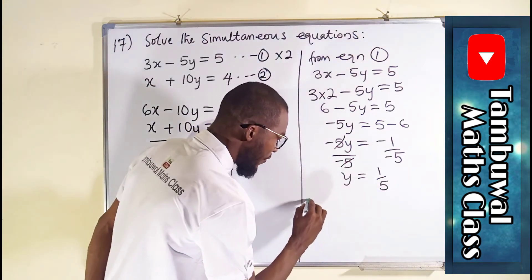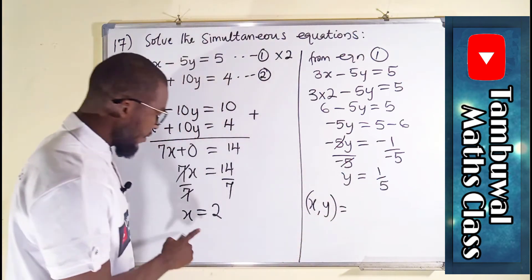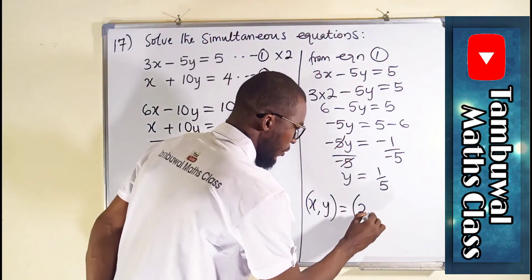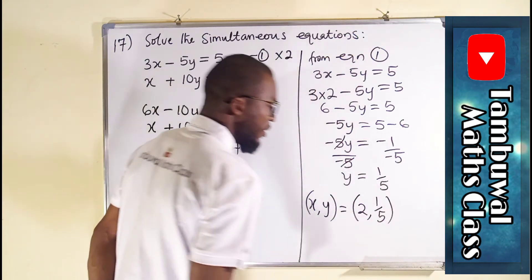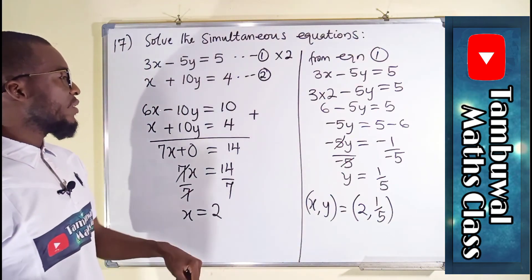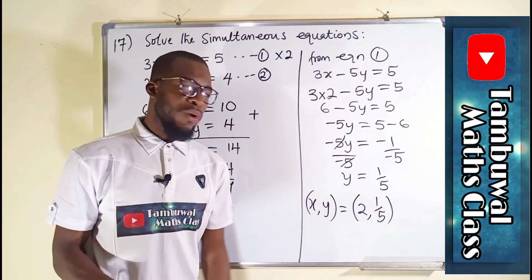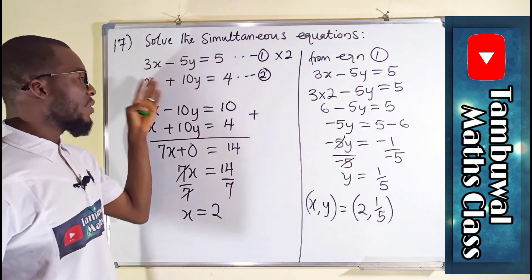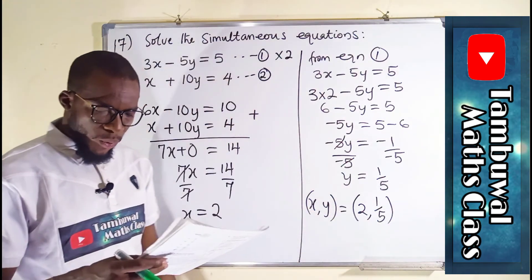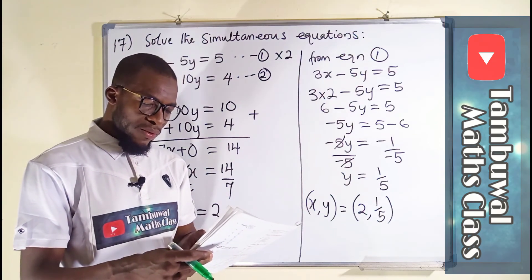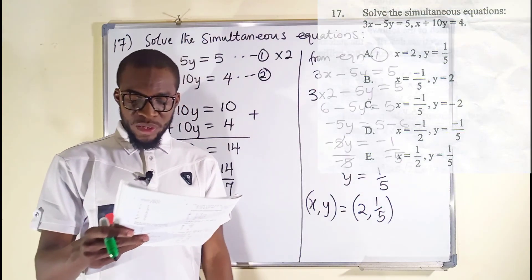So finally, the values of x and y are: you can see for x you have 2, and for y we have 1 over 5. So this is the solution to this simultaneous linear equation. The value of x is 2 while the value of y is 1 over 5. You can test it in the main equation to find out whether this statement is really true and what we have here from the options, the right option is option A. Now let us move on to question number 18.